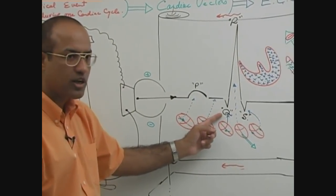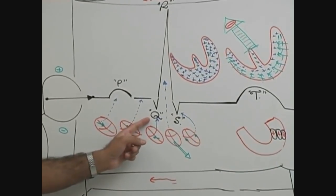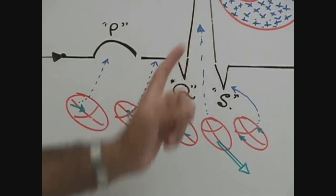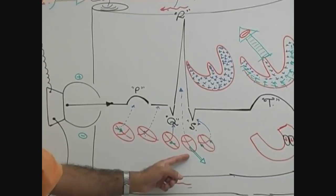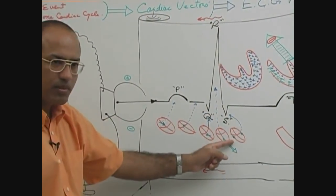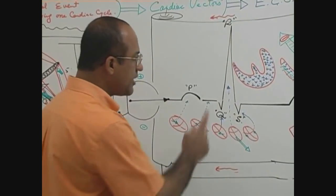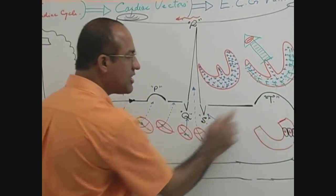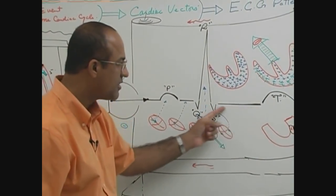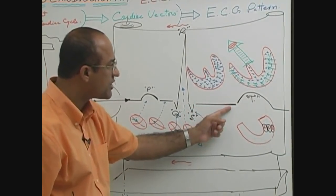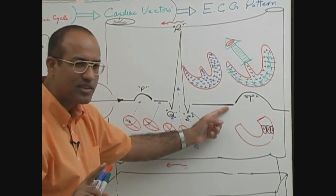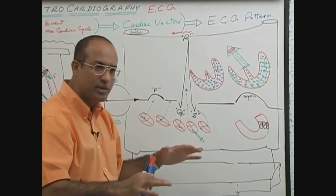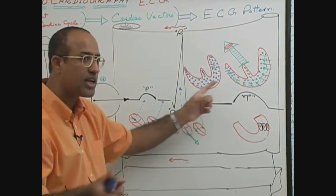The Q wave represents the onset of ventricular depolarization and specifically represents ventricular septal depolarization. The R wave represents major ventricular depolarization. The S wave represents basal ventricular depolarization. The straight line at the end of the QRS and at the beginning of the T wave is called the ST segment, representing the time during which all the ventricle is completely depolarized yet repolarization has not started.